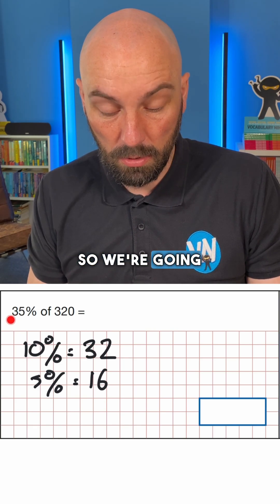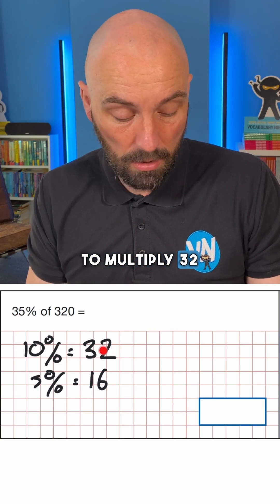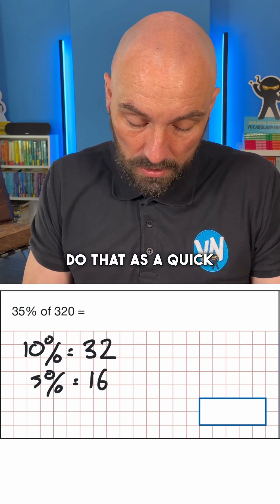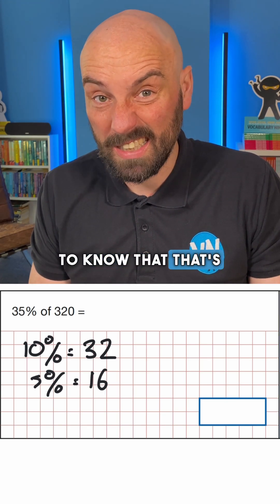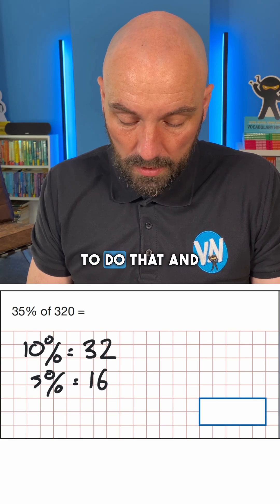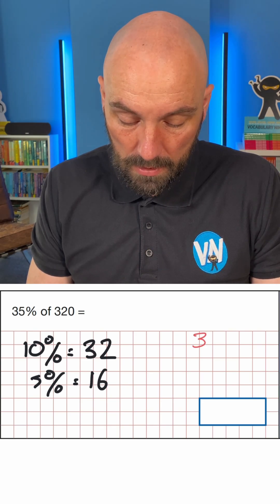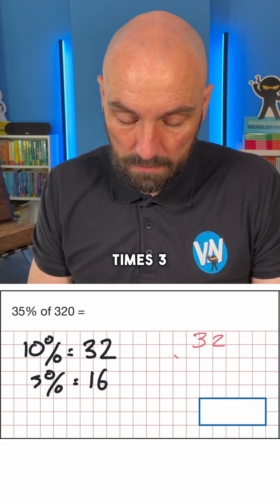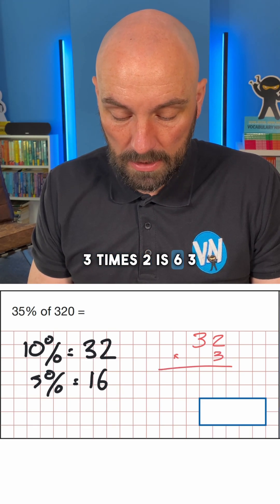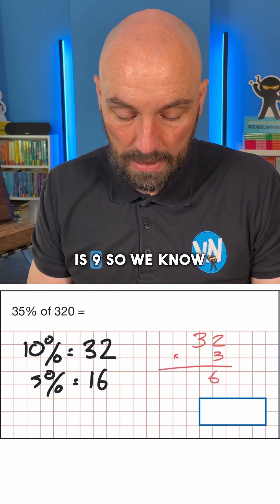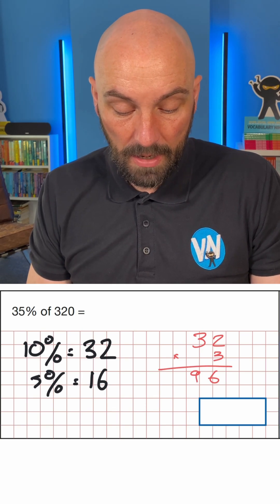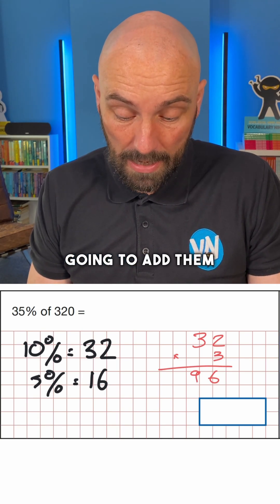We're going to multiply 32 by 3. If we wanted to do that as a quick short multiplication, we should be able to know that's 96. But if we needed to work it out: 3 times 2 is 6, 3 times 3 is 9 — so we know that 30% is 96. And 5% is 16.